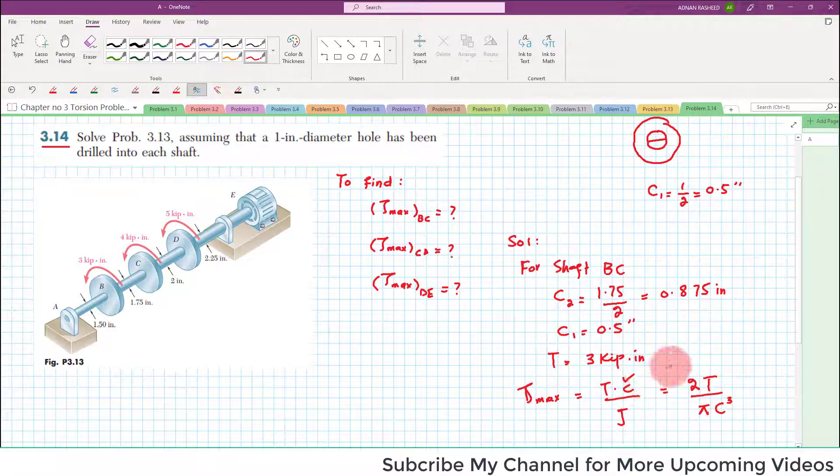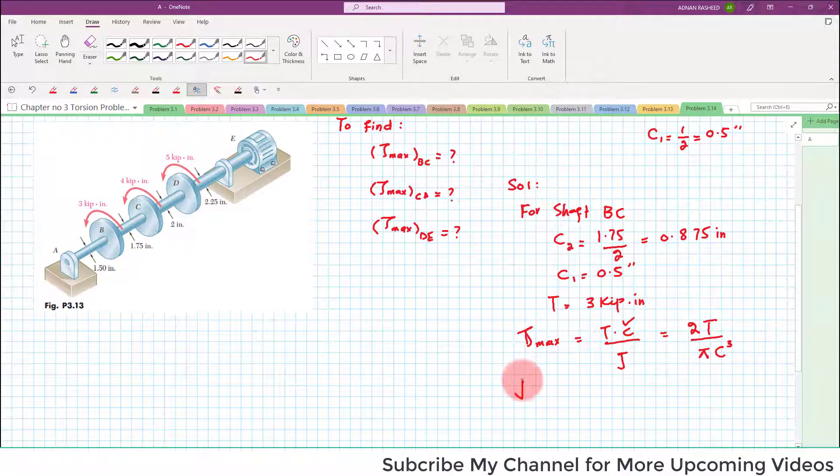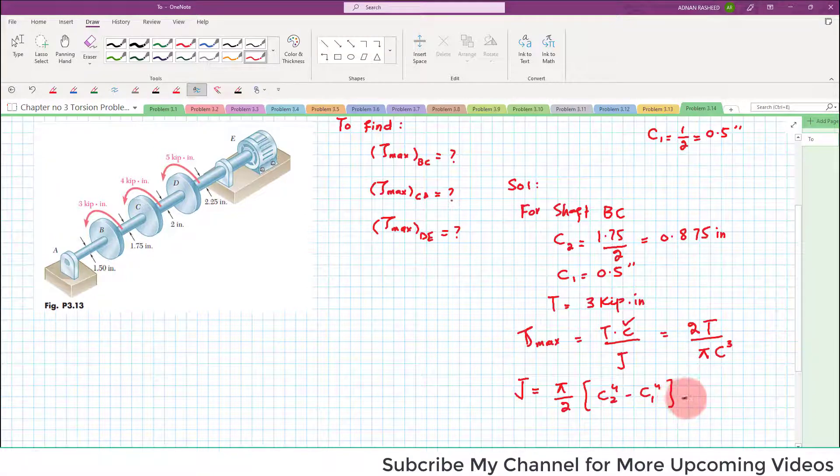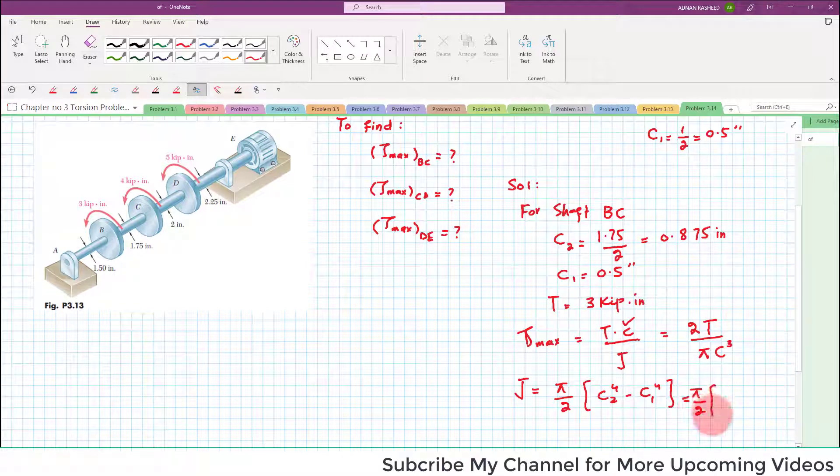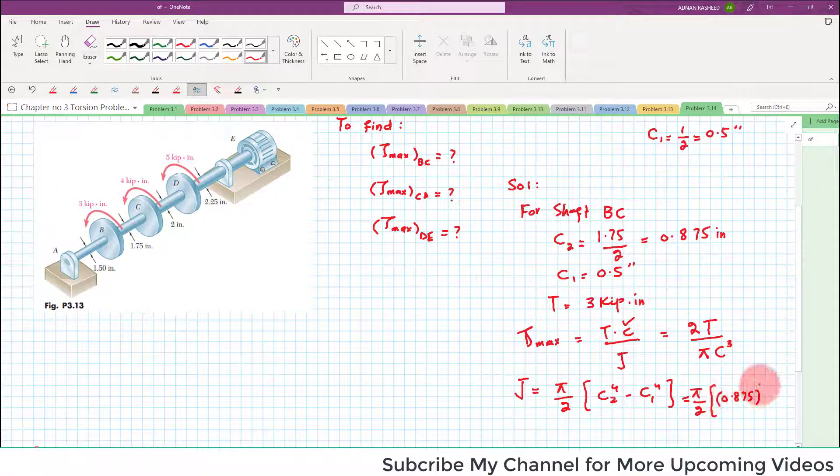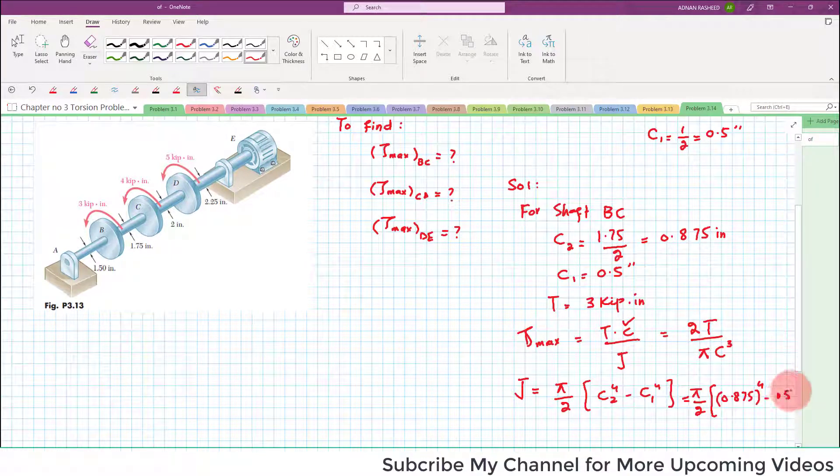So we will definitely use this formula for simplicity purpose. You can also find J and you know that J, polar moment of inertia for hollow cylindrical shaft, is equal to pi by 2 times C2 to the 4th minus C1 to the 4th. So if you put the value C2 is equal to 0.875 to the 4th minus 0.5 to the 4th. And this J comes out to be 0.822 inch to the 4th.